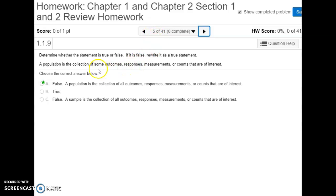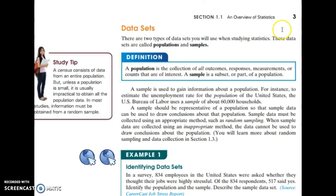Number five is another definition, this time about what a population is. It is the collection of all the outcomes — not just some or part, but all the outcomes, responses, or measurements that are of interest for the particular statistical study that we're doing.